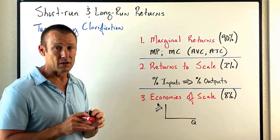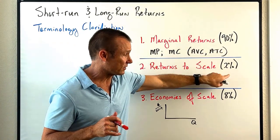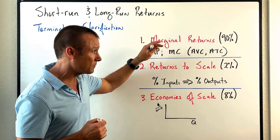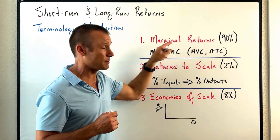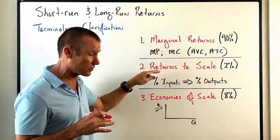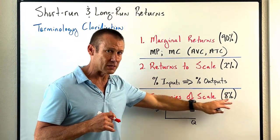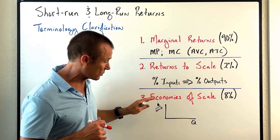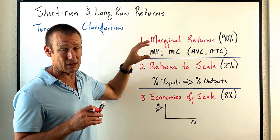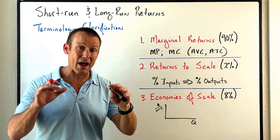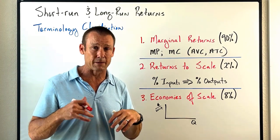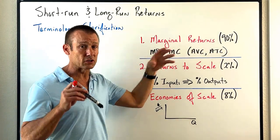You see some percentages here — those are just rough estimates. I'm basically saying: if you're talking about one of these three terms, 90% of the time you're talking about marginal returns, about only 2% of the time returns to scale, and maybe 8% of the time economies of scale. Marginal returns is the big one — most of your class and most of the graphs you do have this concept underlying them.